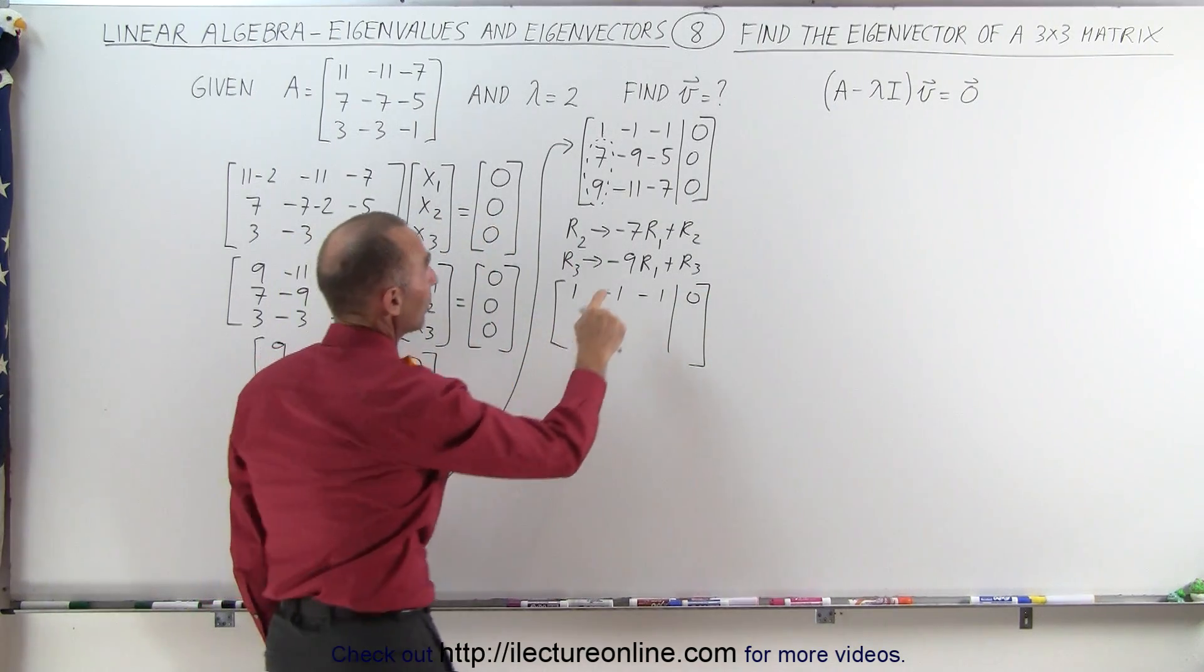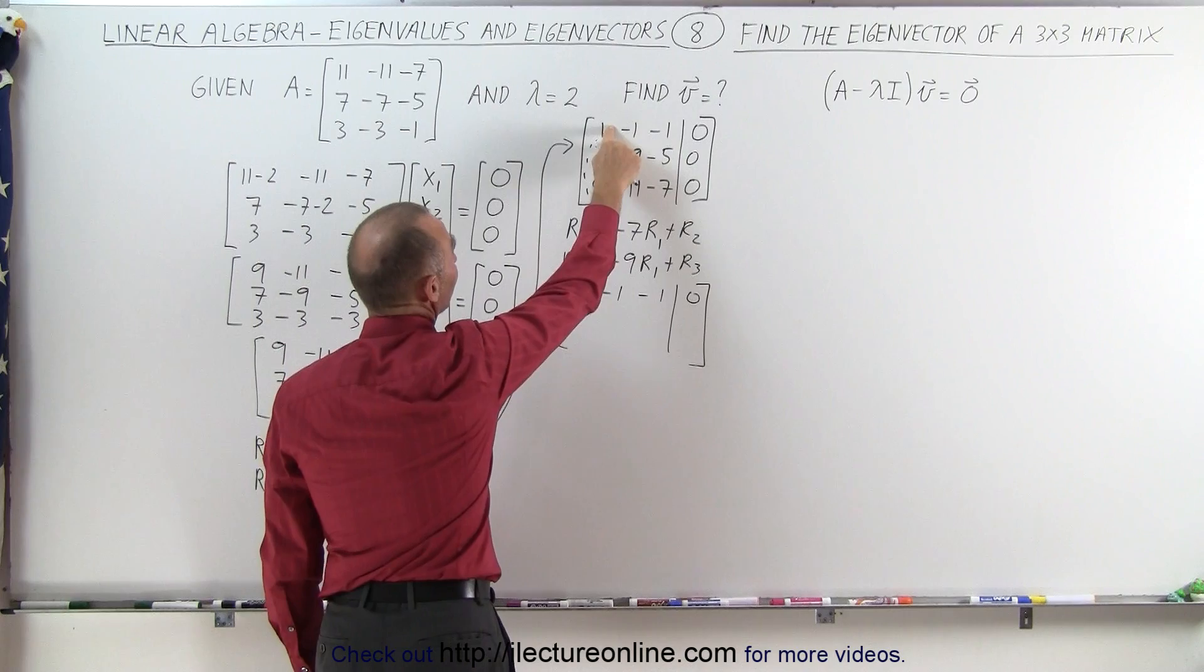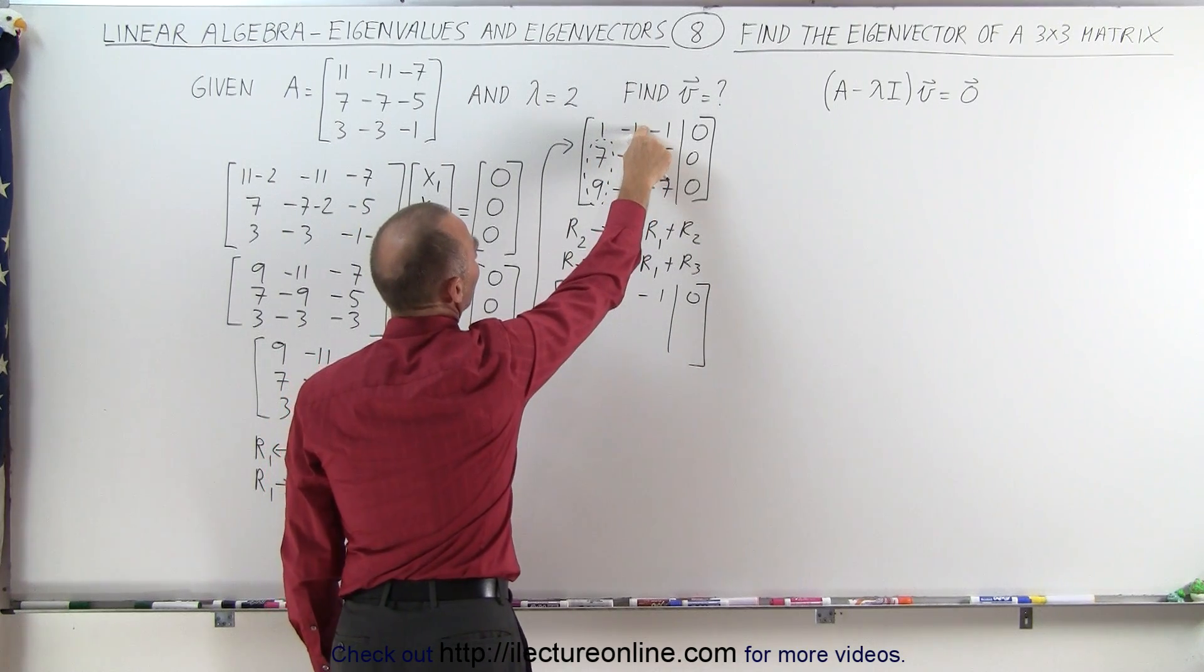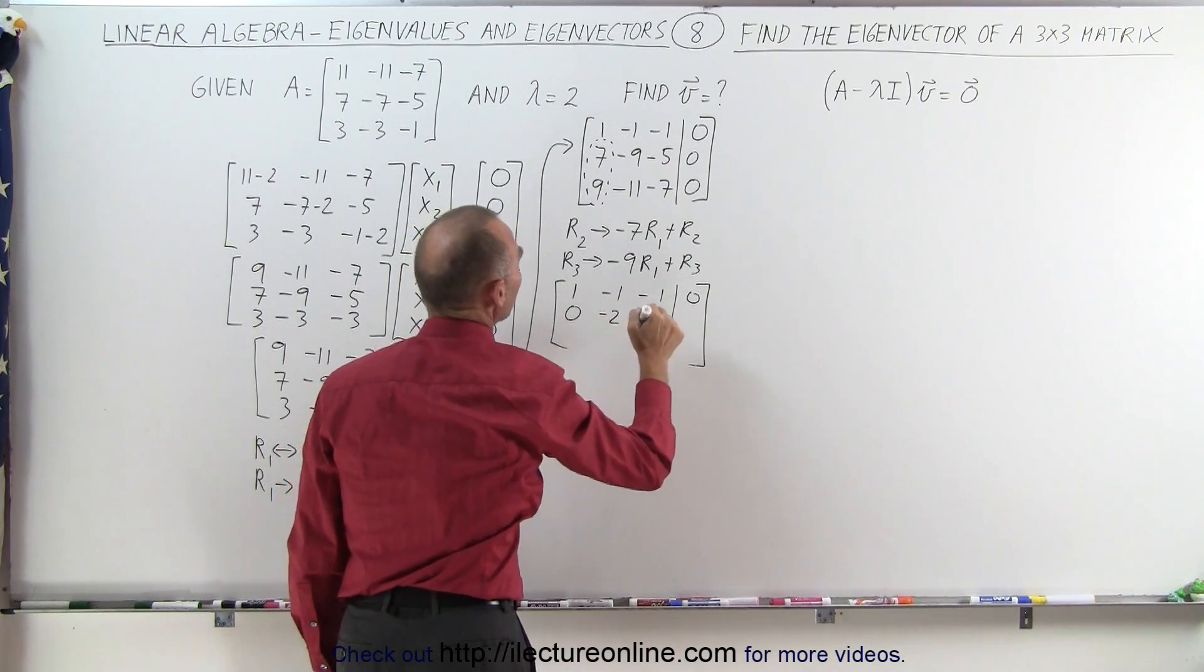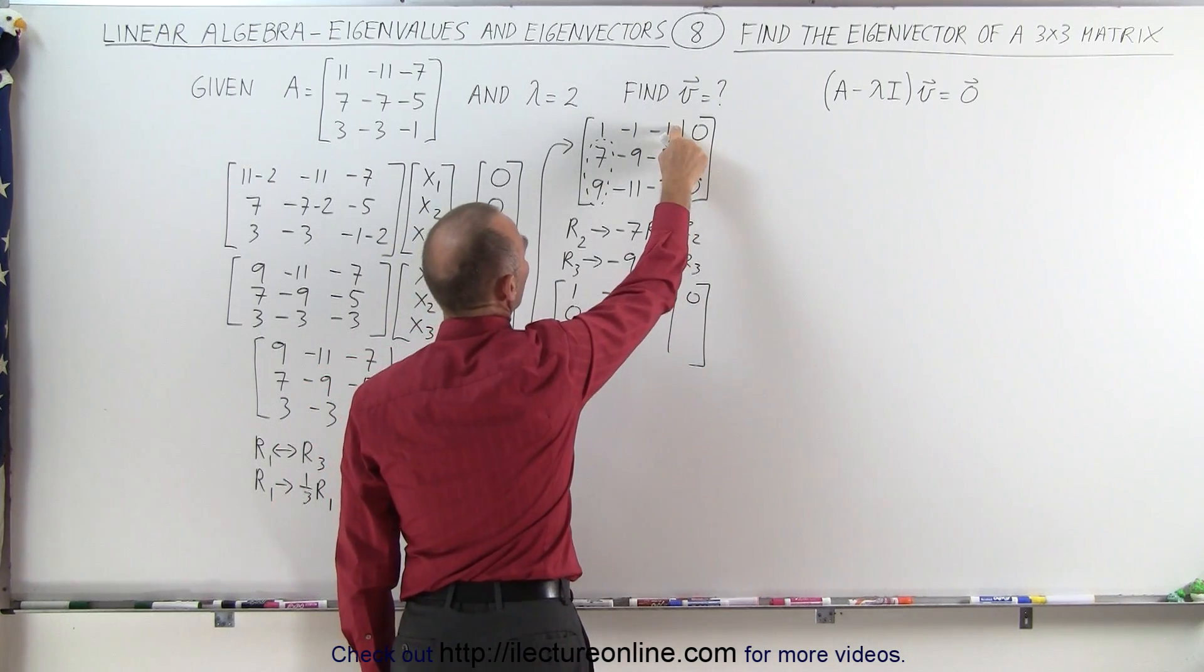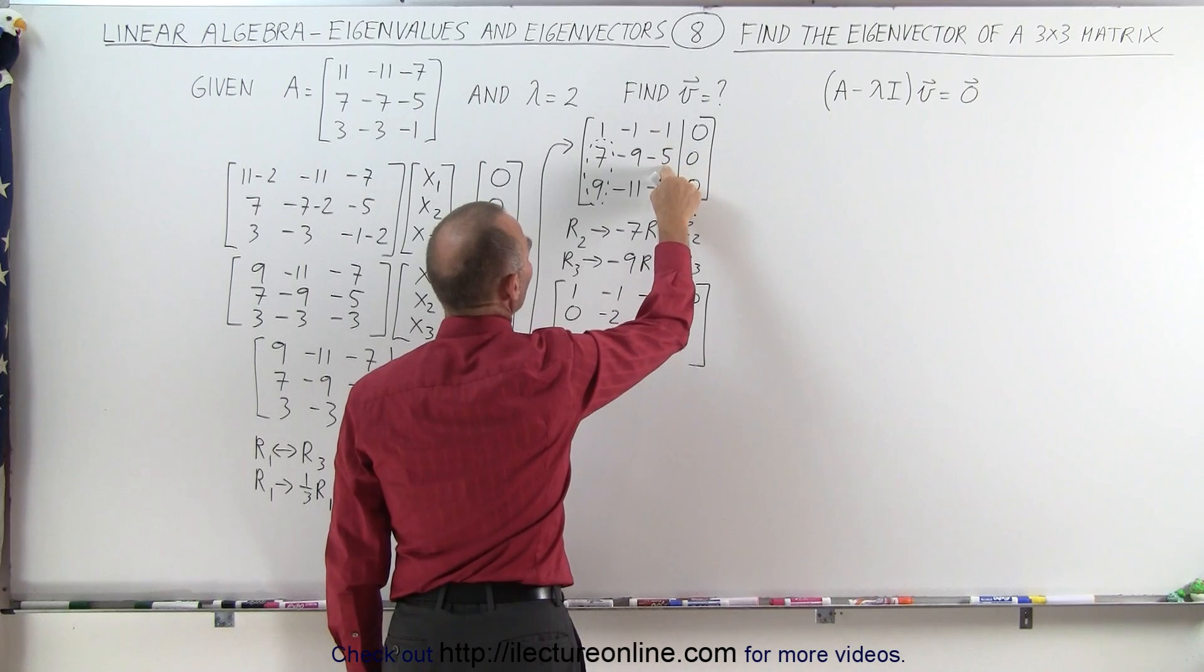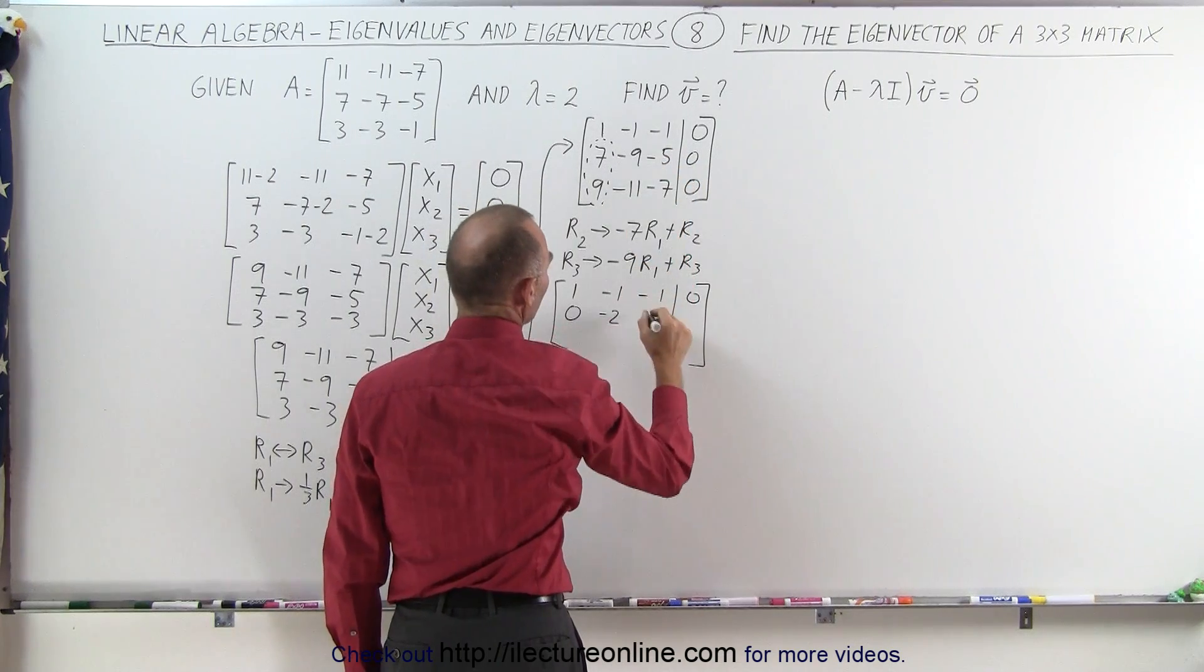We have minus 7 times this, added to this, gives me 0. Minus 7 times this is a plus 7, added to minus 9 is a minus 2. Minus 7 added to minus 1 is plus 7, added to minus 5 gives me a plus 2.